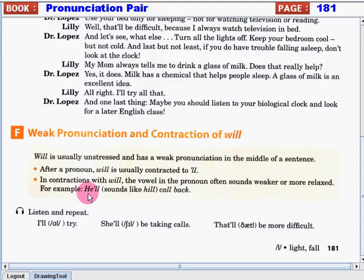In today's video, we will talk about weak pronunciation and contraction of the word will. Will is usually unstressed and has a weak pronunciation in the middle of a sentence. After a pronoun, will is usually contracted to L. In contractions with the word will, the vowel in the pronoun often sounds weaker or more relaxed. For example, the word he'll sounds like hill as in the mountain.